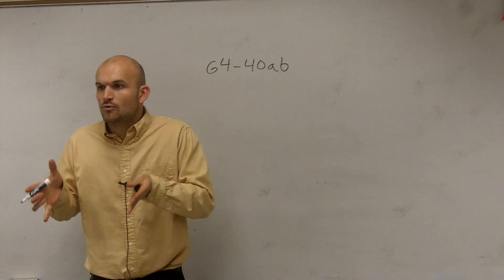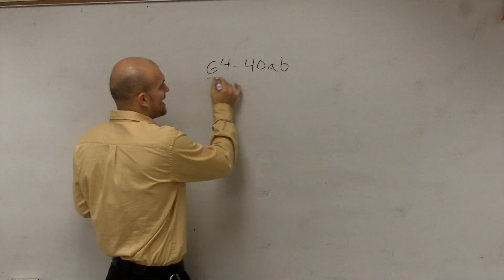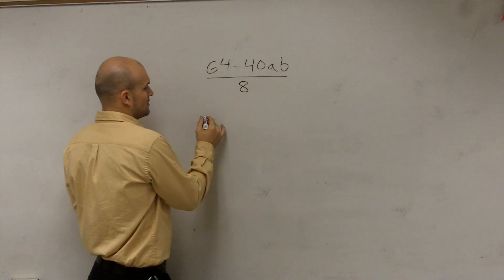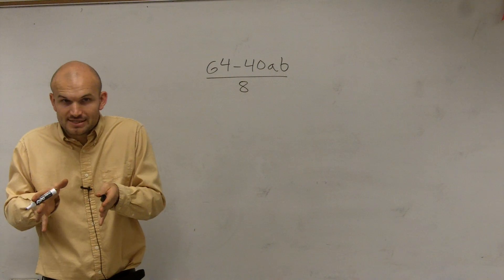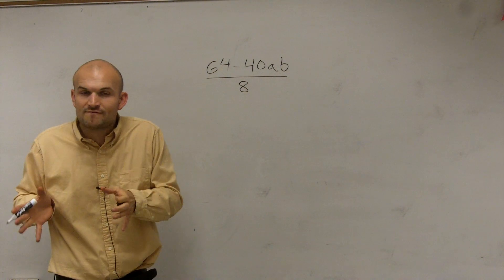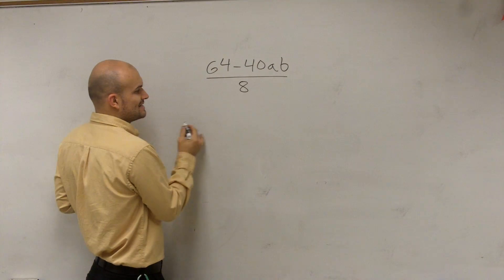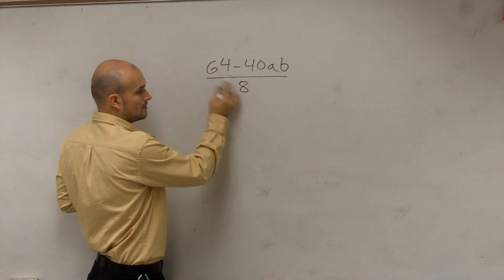So what you're doing is you're dividing out your GCF. So let's divide by 8. You're going to take your GCF and divide all your terms by 8. That's what we call factoring by distributive property. So 64 divided by 8 is 8.